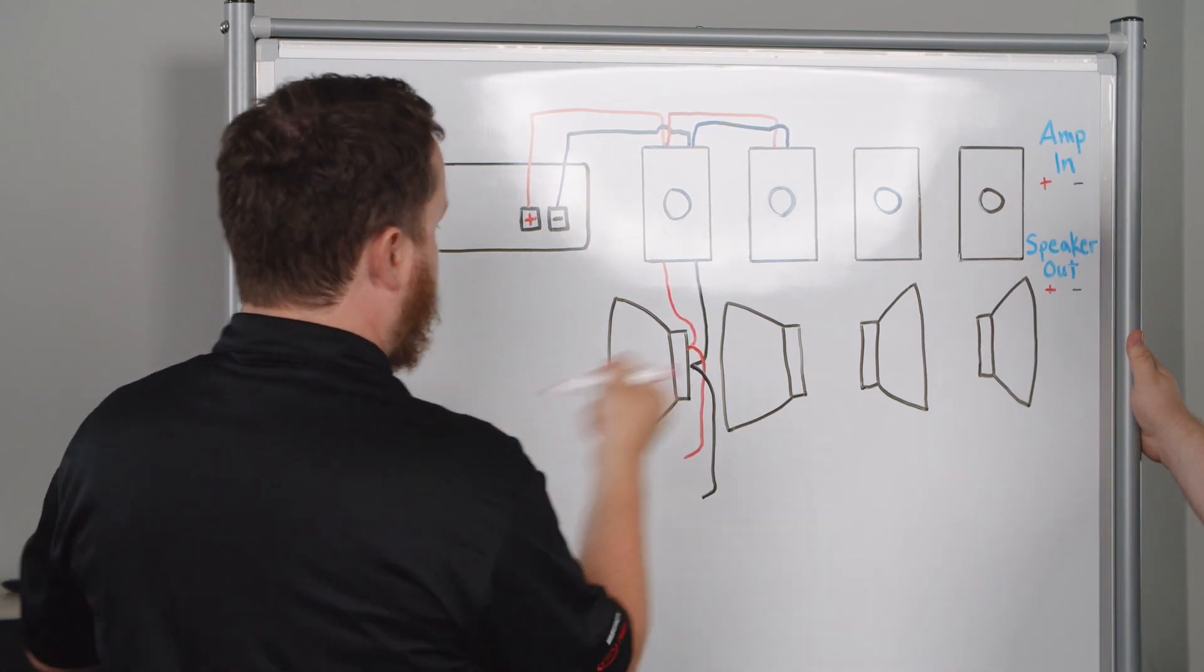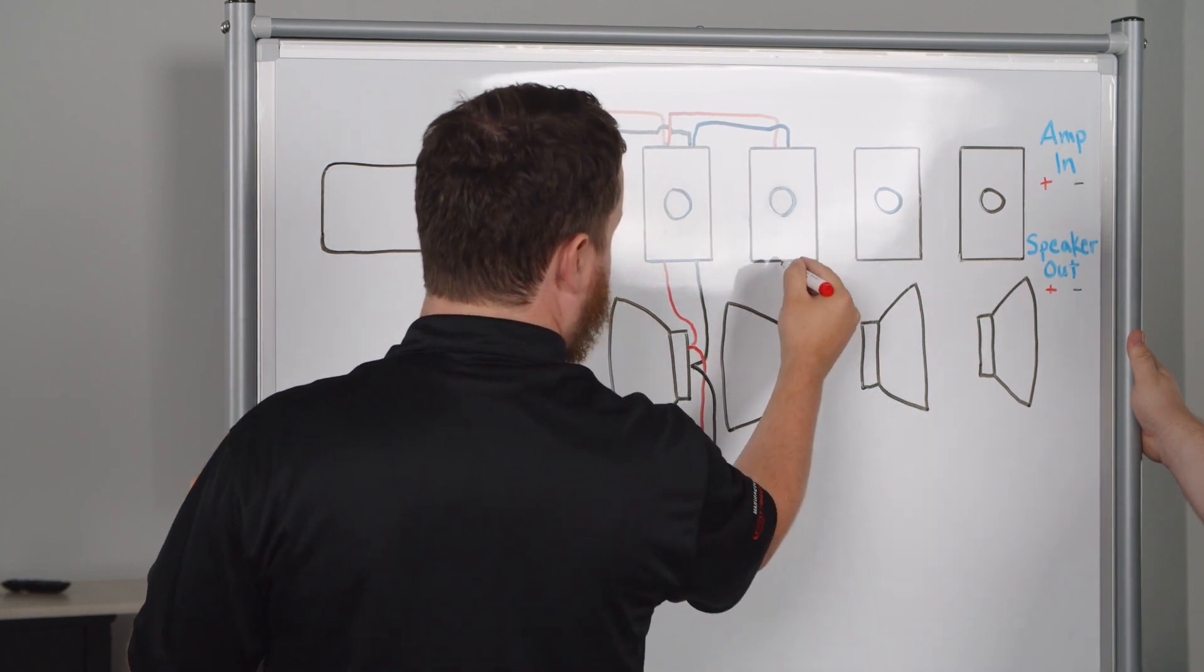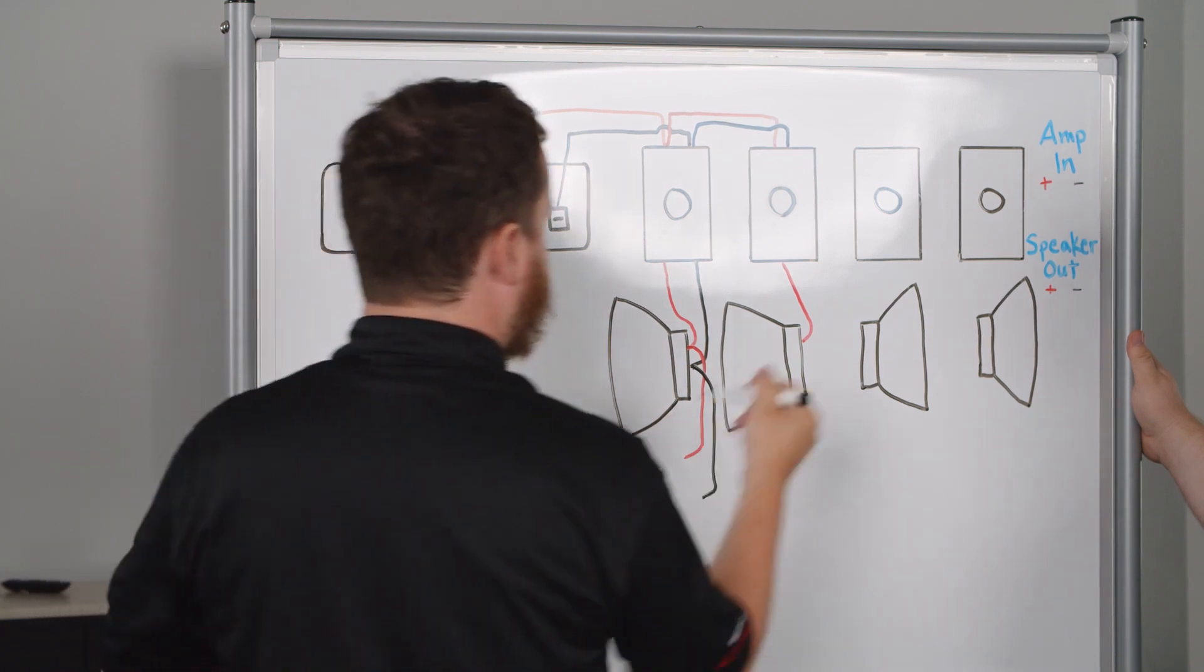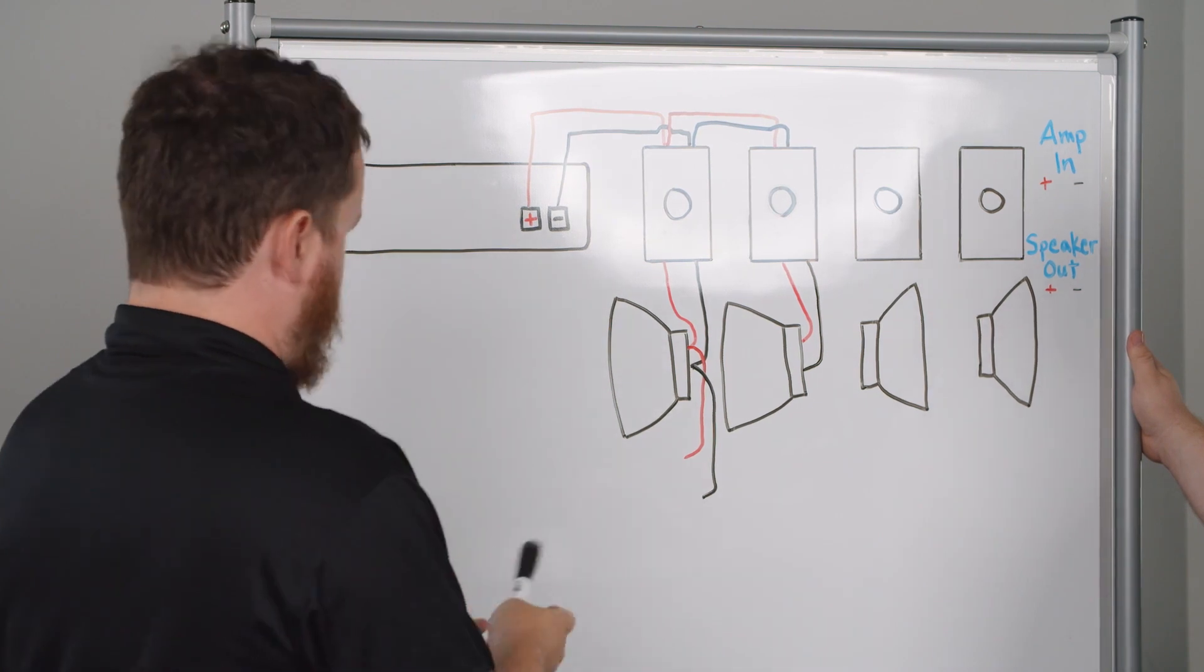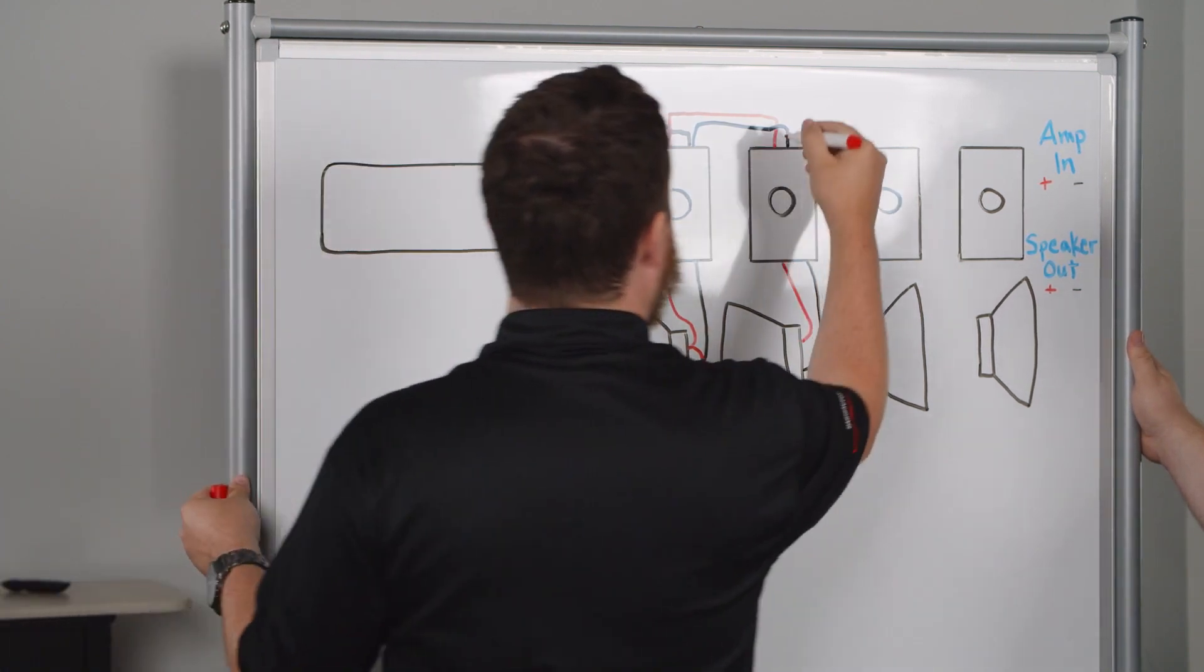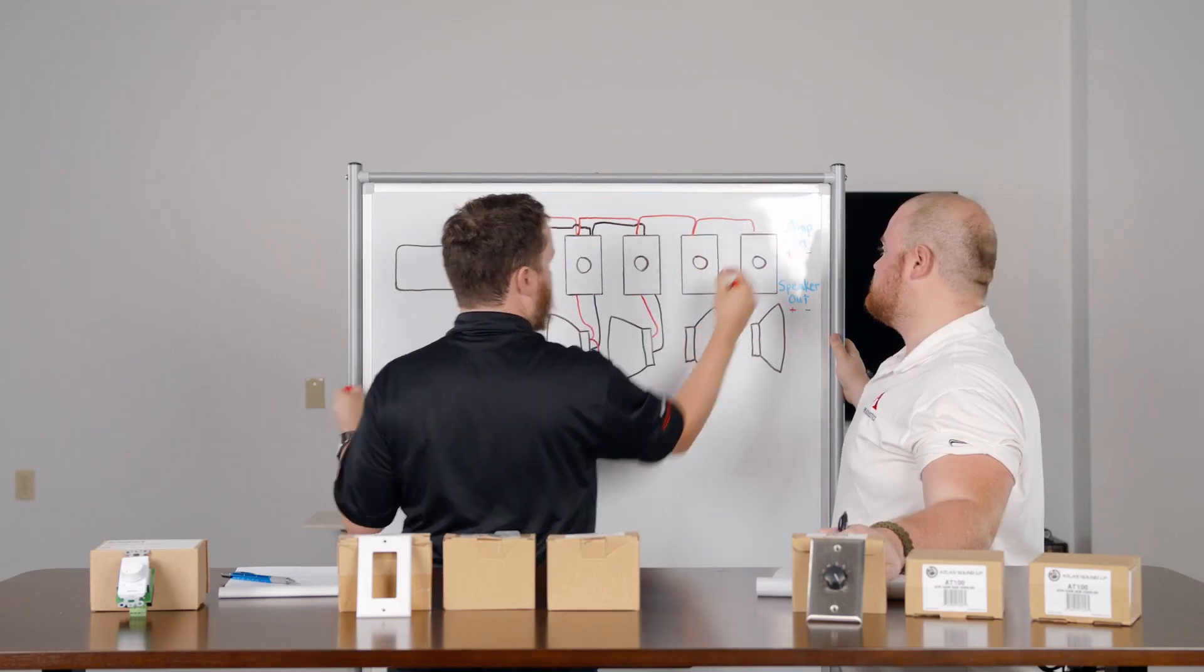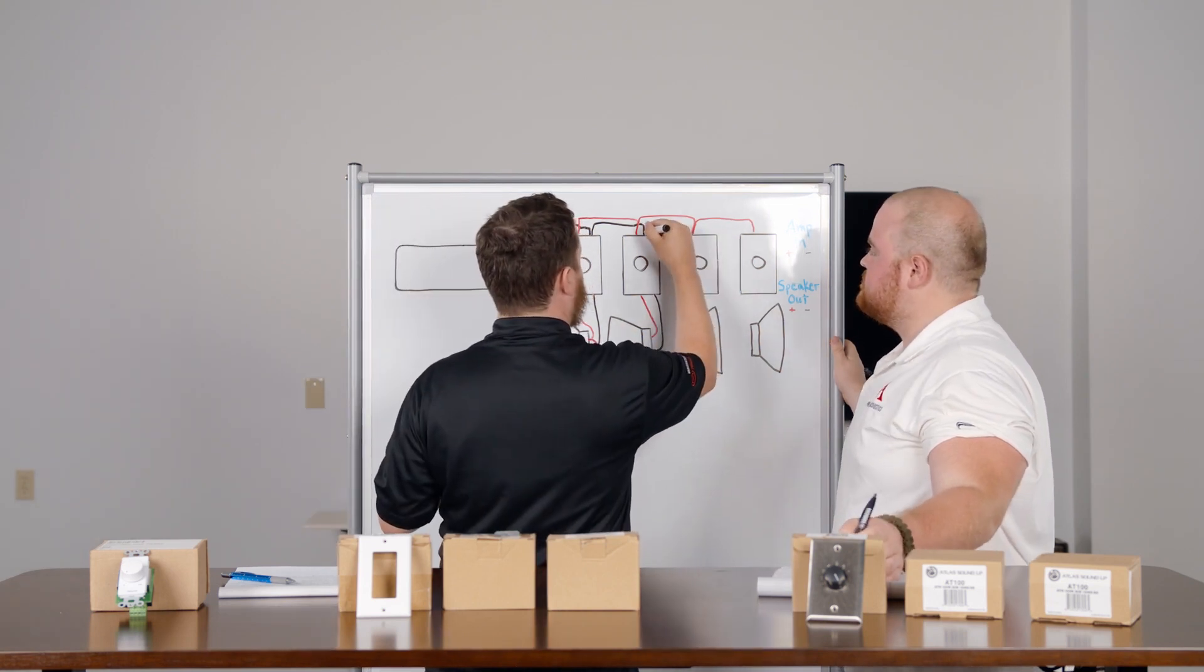From there, we're going to come out of that volume control, out of the speaker out side. This is going to be on the attenuated side, the side that lowers or raises the volume. And we're going to go into the positive terminal of the speaker. We're going to do that again. I guess you guys probably get the hang of it at this point, but I'm going to go ahead and draw the rest of it just for the folks at home. And then do it again with your negative.